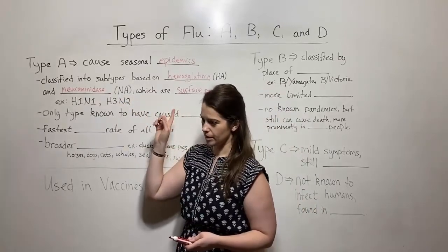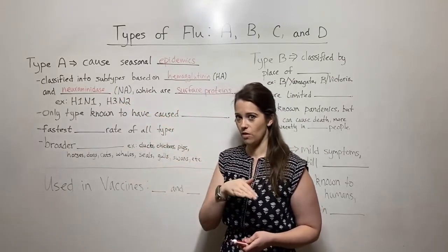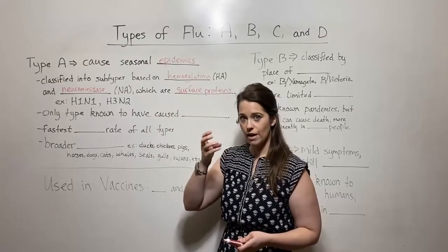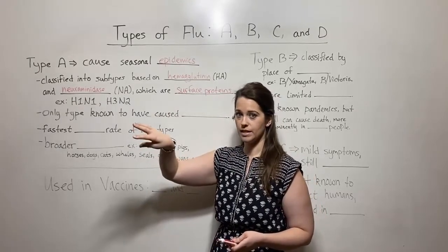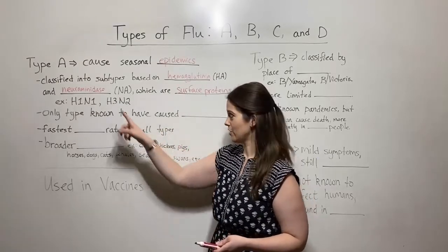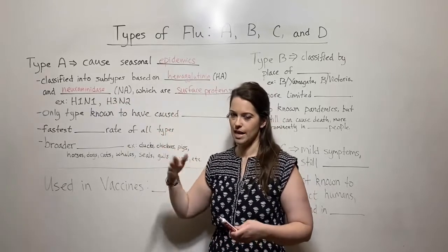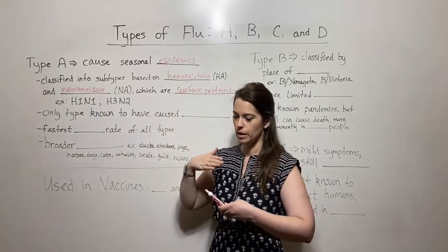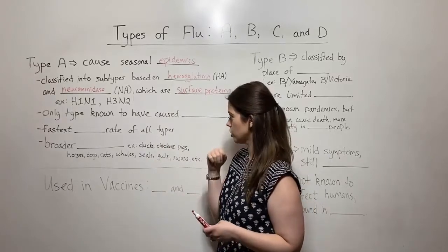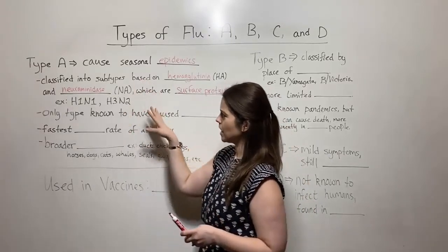Neuraminidase is another surface protein that happens at the end of that replication cycle. When the offspring viruses are budding off of the cell, they have to cleave that sialic acid residue, so cut it, and the neuraminidase does that. So these are important surface proteins that allow the flu to get into a cell and then get out of a cell to go back to another one.